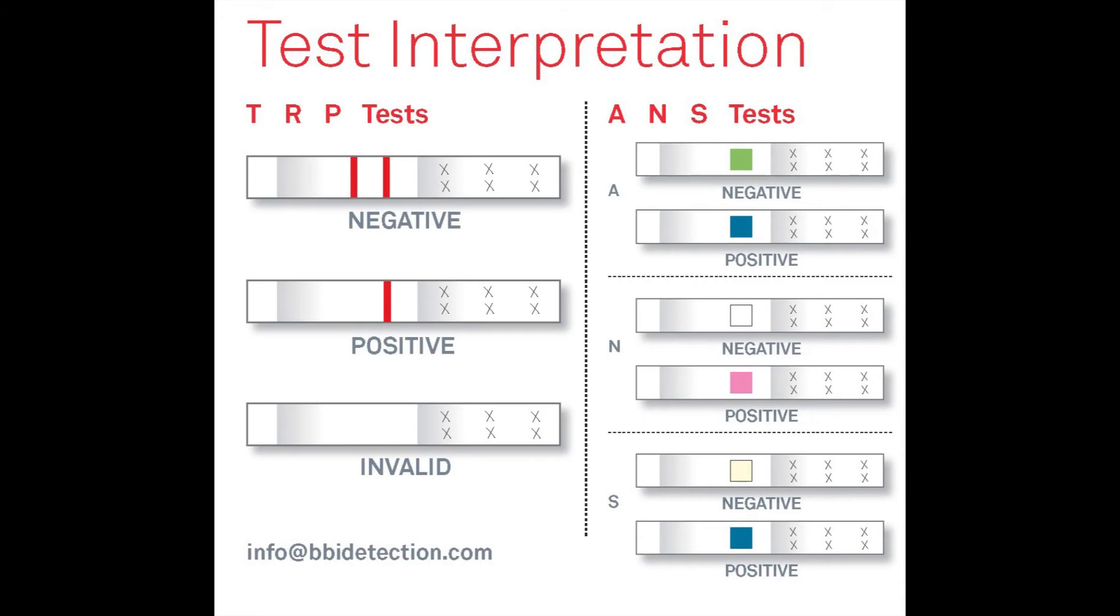For the explosive detection IMAS, there are two formats of tests. The TRP tests are interpreted as follows. Two lines are negative. A single line is a positive result.